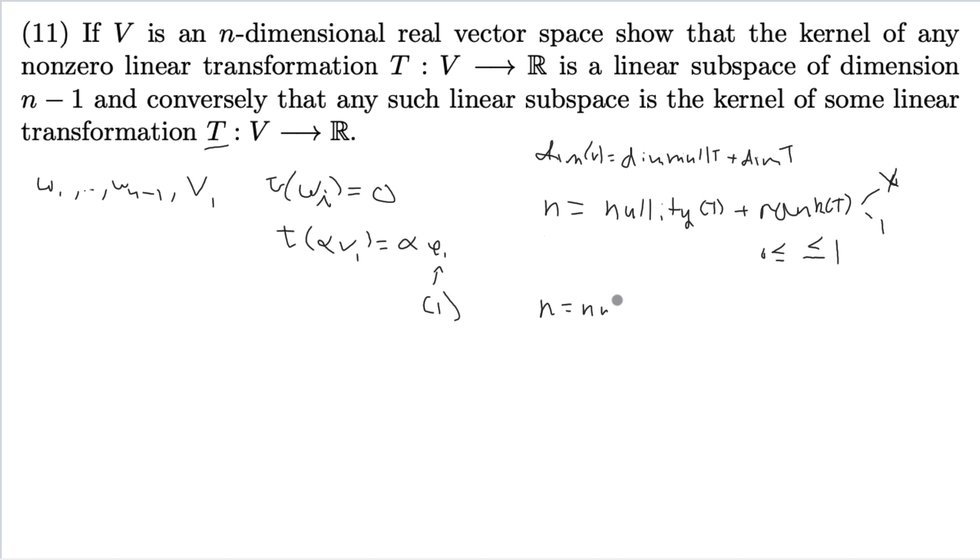Therefore, we get n is equal to the nullity of T plus 1, since the rank of T must now be 1. We subtract this over, and we get the nullity of T is equal to n minus 1. And then we'll call the nullity is the dimension of the null space, or the dimension of the kernel.